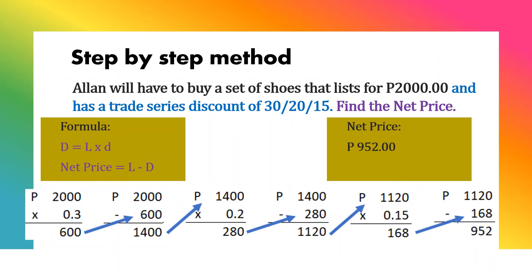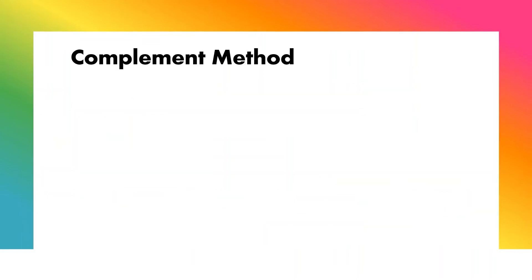So, the net price is 952 pesos. This means Alan will pay only 952 pesos for the set of shoes originally priced at 2,000 pesos. Since the step-by-step method is lengthy to compute, we have another method: the complement method.